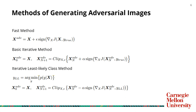The third method is new, proposed by this paper. It is a targeted method where the target is the least likely class in the original classification process. We take iterative steps in the direction of the signed gradient to make the classifier output this least likely class.